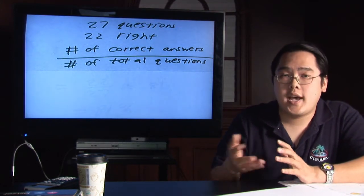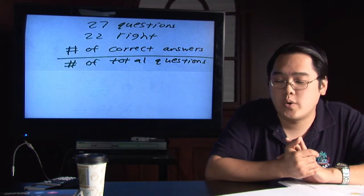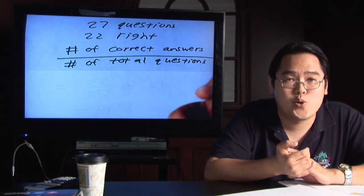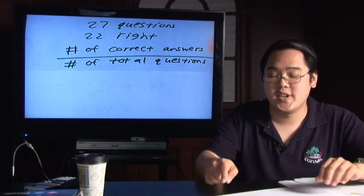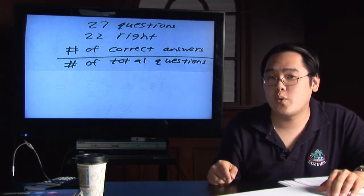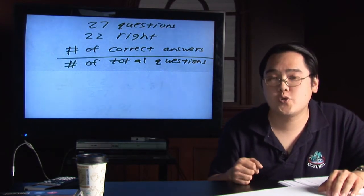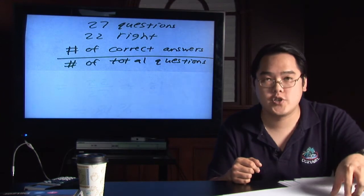So in the case of this particular student who got 22 out of 27, that is exactly the order in which you want to plug in those numbers. The number of correct answers is going to be 22, the number of total questions was 27. That's how many questions the test had.